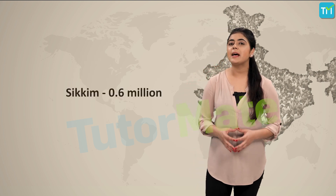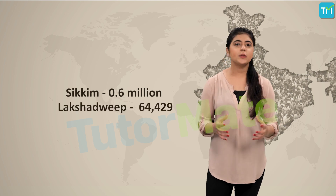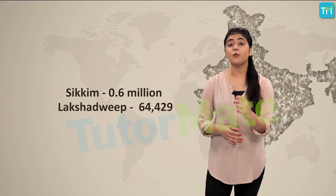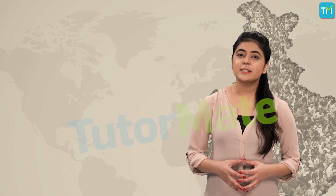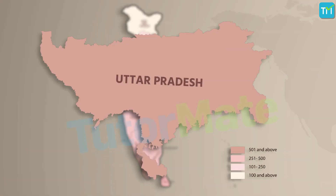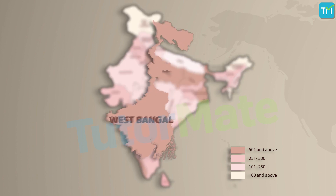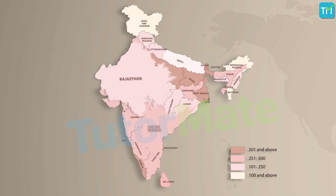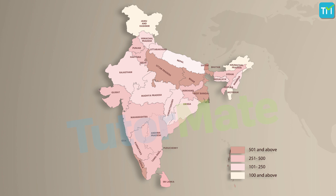On the contrary, Sikkim has a population of 0.6 million and Lakshadweep stands at 64,429. Almost half of the population of India is concentrated in the states of Uttar Pradesh, Maharashtra, Bihar, West Bengal, and Andhra Pradesh. Though Rajasthan is the largest state in terms of area, it only constitutes 6 percent of the total population of the country.